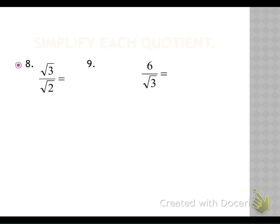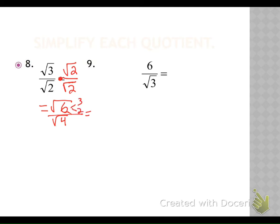Here we have a radical in the numerator and denominator. There's nothing in common between the three and the two. So we multiply the numerator and denominator by what our denominator is — the square root of two. We end up with three times two in the numerator, and two times two in the denominator. Six goes to three and two; none of them have buddies, so it stays the square root of six. The square root of four has twos that have a buddy, so two comes out. We end up with square root of six over two.